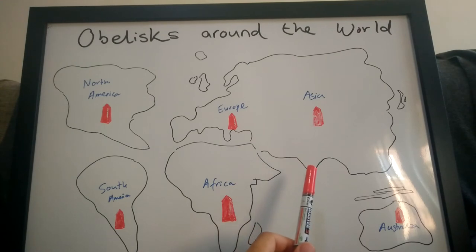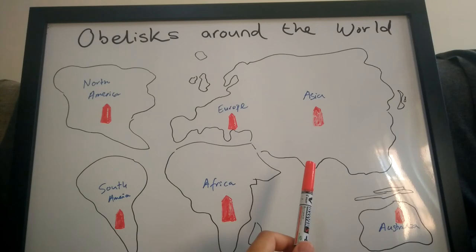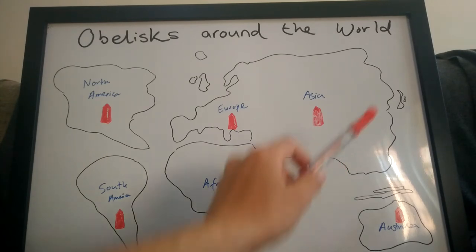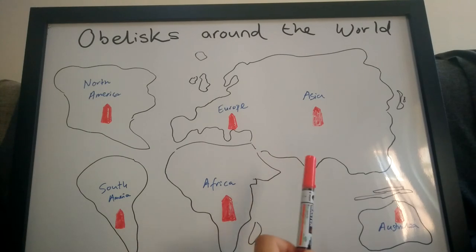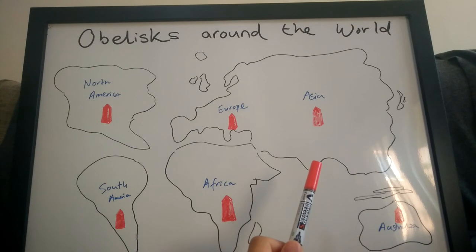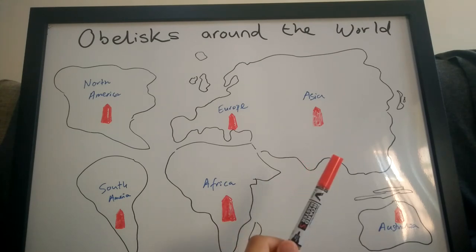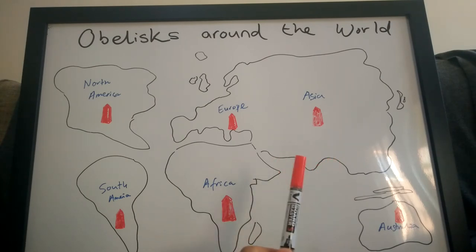In Asia, we have Maldives, Afghanistan, Brunei, Bahrain, East Timor, Christmas Island, and British Indian Ocean Territory. There might be some obelisks in some of those, but I could not find them. All other major countries — you can notice I'm not reading China, India, Japan, Russia — they all have this obelisk.